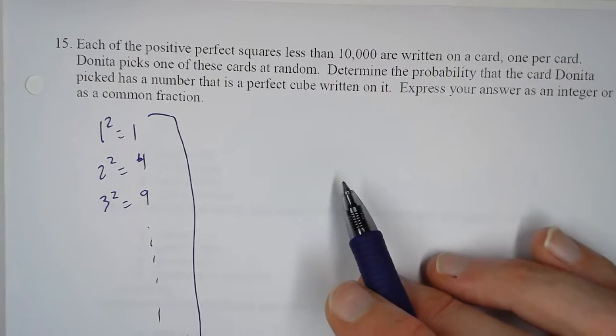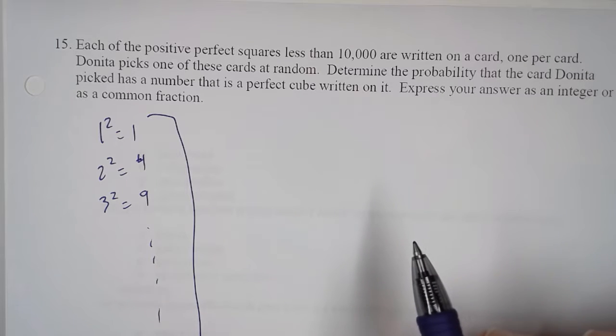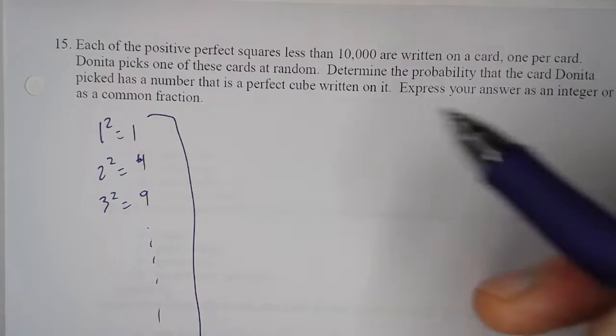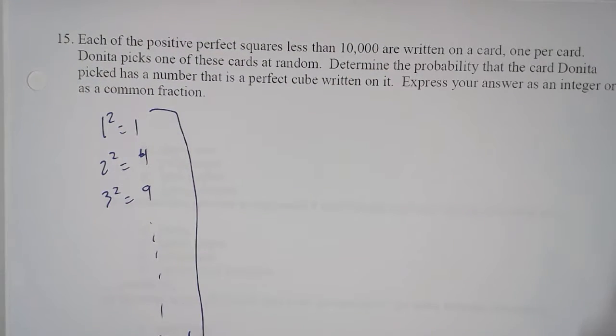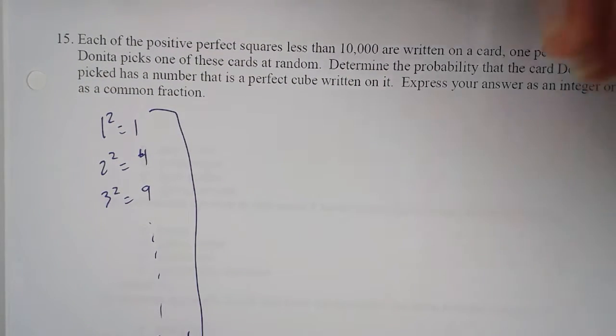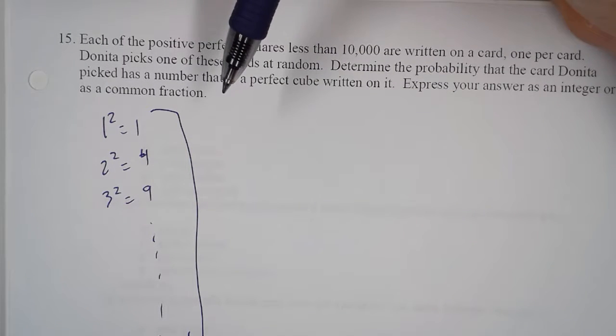Well, if a number is a perfect cube and a number is a perfect square, that means that each number is a perfect sixth.